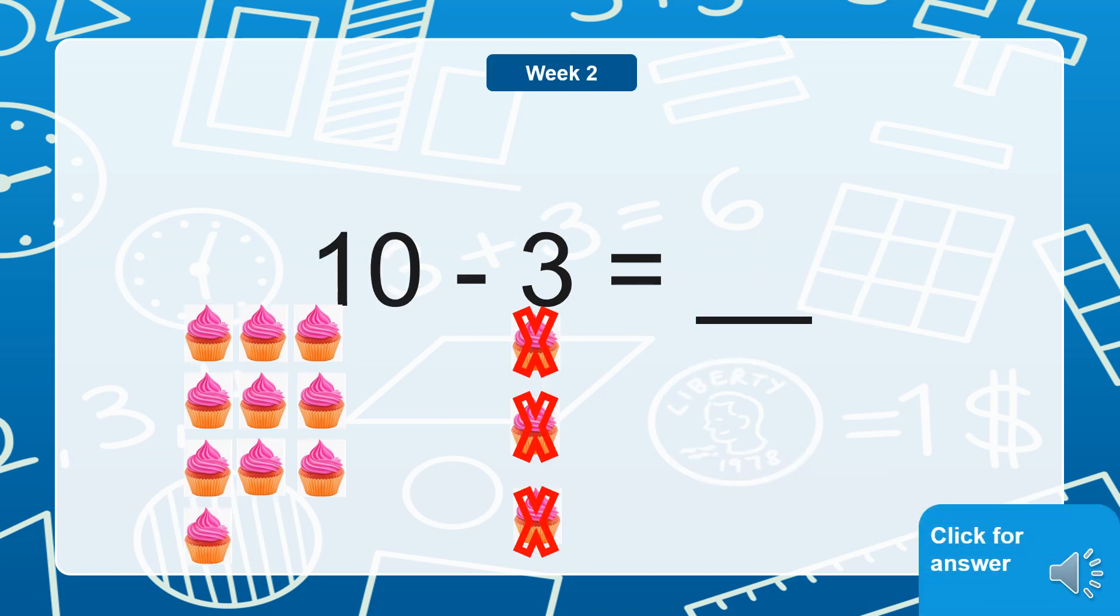10 minus 3. What does 10 minus 3 equal? Remember minus means to take away, that's why it's got the crosses through it. That means we don't need them anymore. So 10 take away 3. Can you draw 10 cupcakes on your piece of paper and then cross out three of them? Once you've done that, count them again and see how many you have left and then you'll have your answer. 10 minus 3 equals 7.